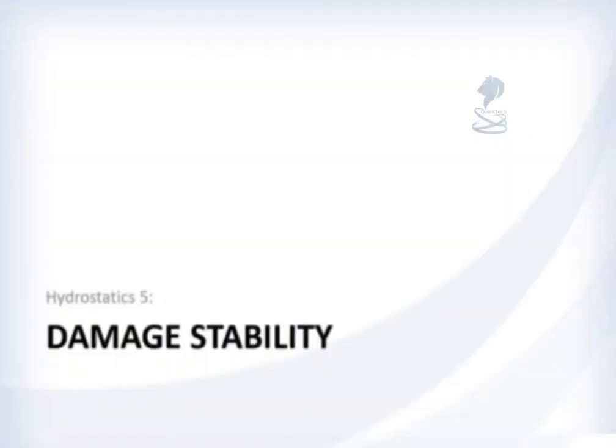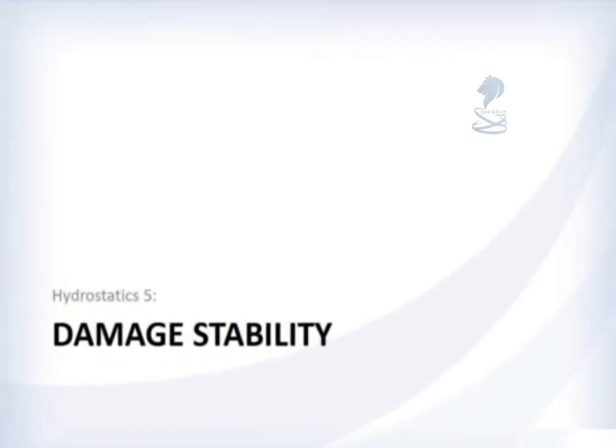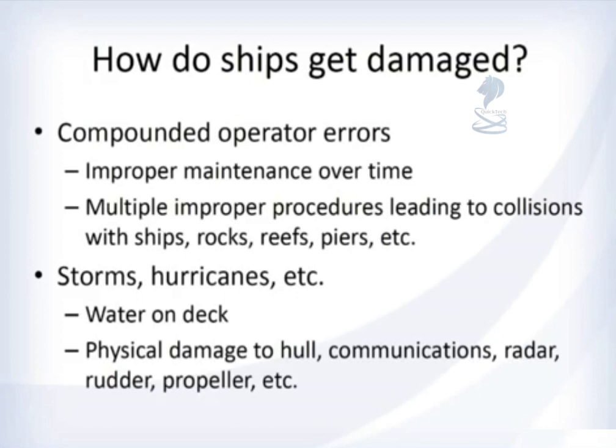I'd like to introduce some concepts around damage stability. We've been talking about stability with GM and GZ and all these numbers and letters — that all had to do with intact stability. Now we've looked at some tricky loading conditions, but what happens if the ship is actually damaged? In general, ships usually get damaged because of operator errors or improper maintenance.